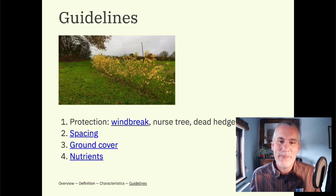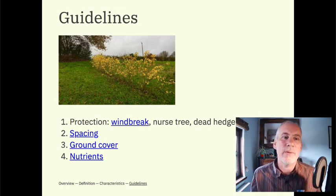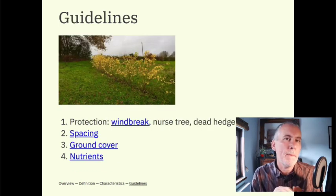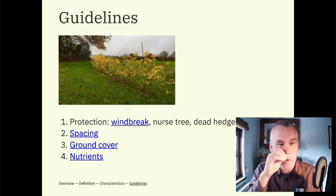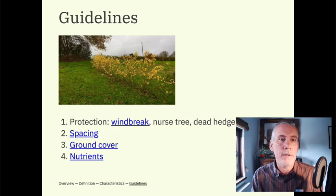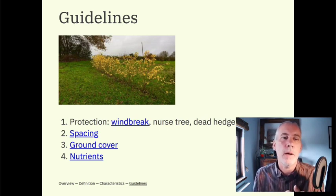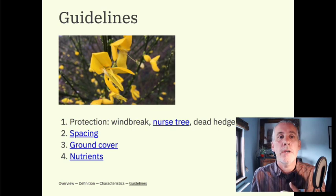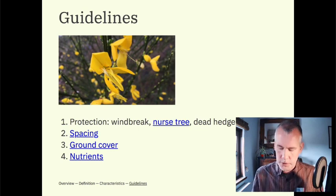I've got ten minutes so I'm going to race through the rest. Here are four guidelines that apply no matter the size of your forest garden - whether you've got a backyard forest or acres. First: protection. You want to protect from the wind - ideally a big thick hedge, great for wildlife, productive, and provides shelter. Whilst the windbreak is getting established you can use nurse trees - a shrub planted in front of a particular tree as it's growing, then removed after a few years. Broom - Scotch broom - is a good nitrogen-fixing nurse tree.